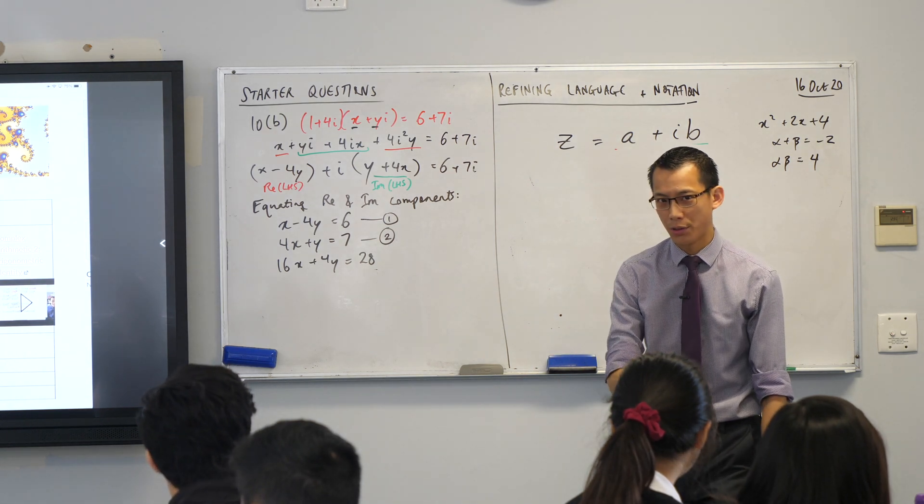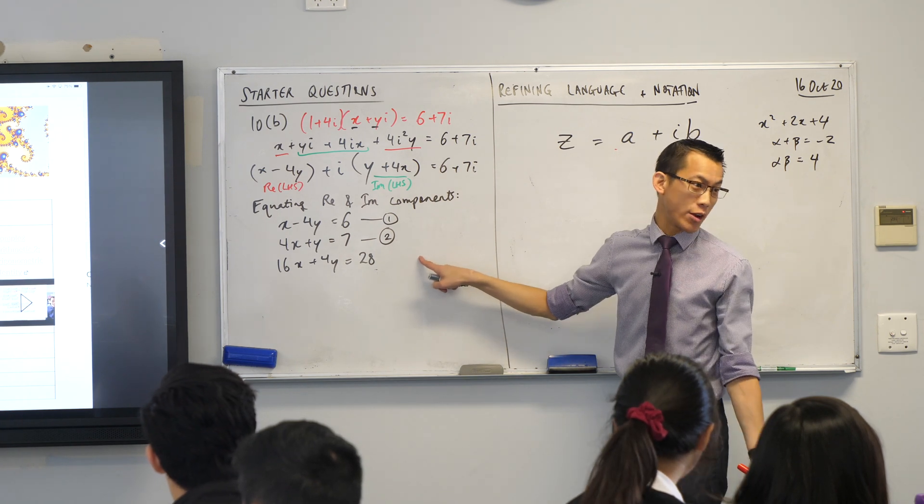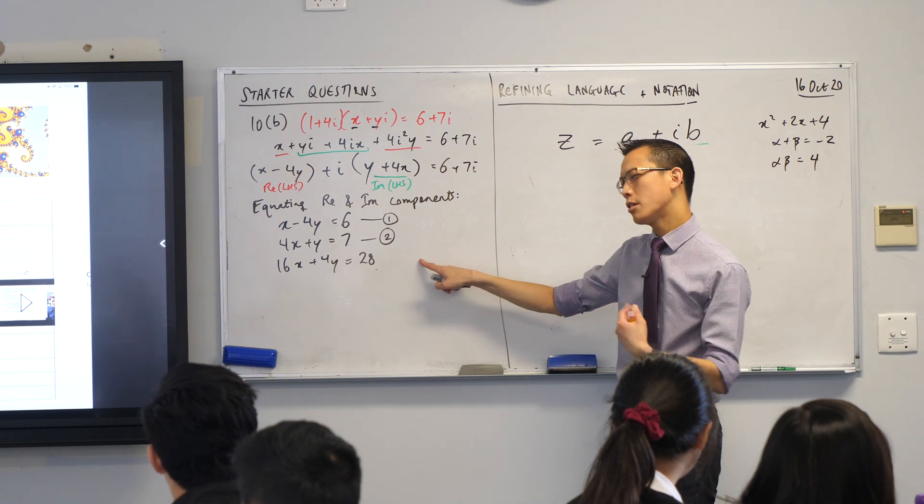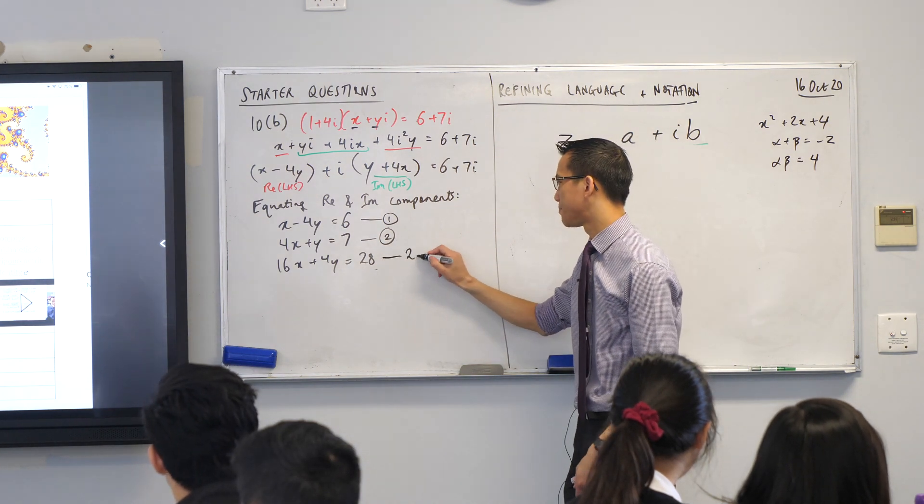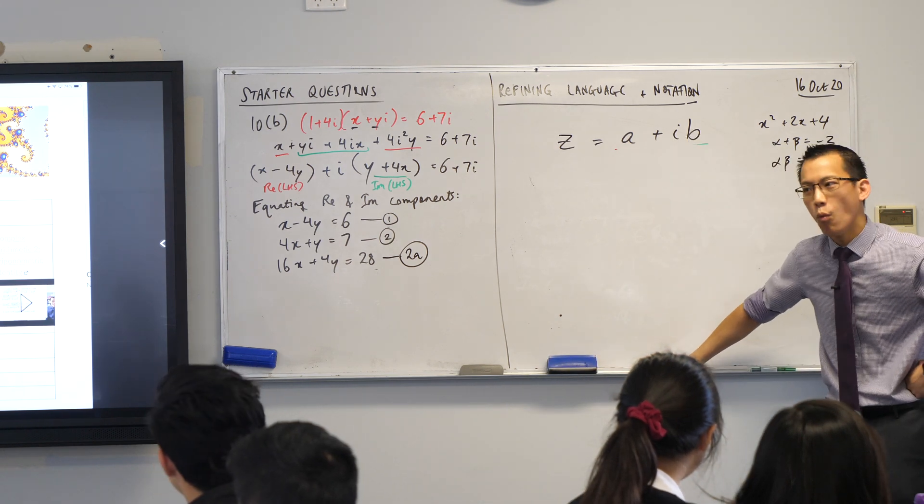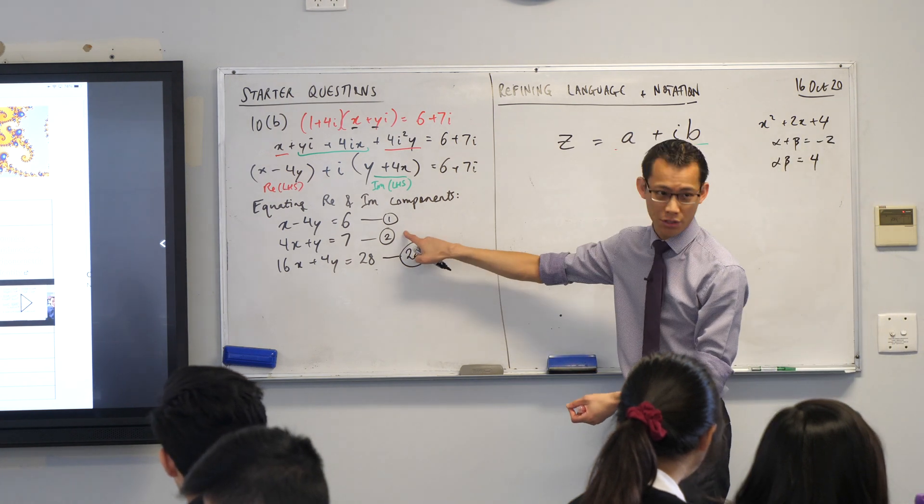And what you're doing is you're setting up to add this equation with the first one, and then your y's cancel, off you go. Now, the thing that I noticed a lot of people doing, I'm not writing it, because I'm going to encourage you not to. I've noticed several people calling this equation three. Now, that's not wrong. I mean, it's the third equation. I'm going to encourage you to do something slightly different.